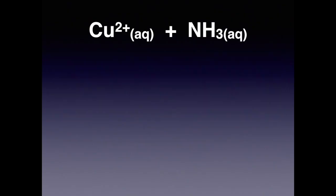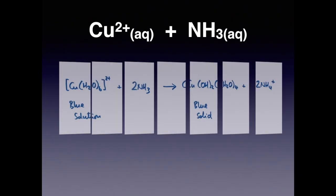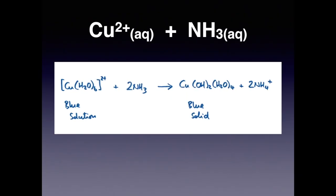The next reaction is Cu2+ aqueous with aqueous ammonia, there's the reaction. So again we start with the Cu(H2O)6 2+ which is blue, 2 ammonias make the same precipitate. That will become clear after the next slide why we get the same precipitate, which of course is going to have the same appearance, blue solid or blue precipitate.